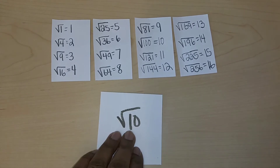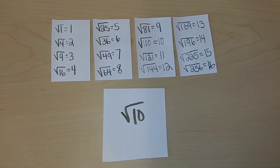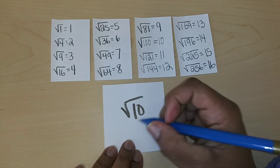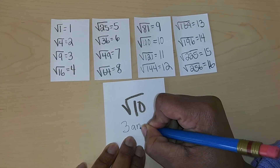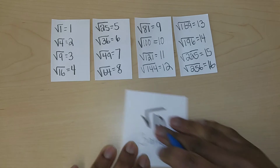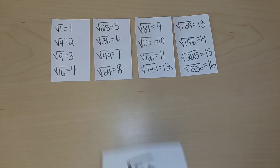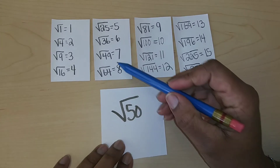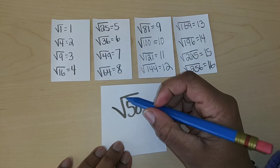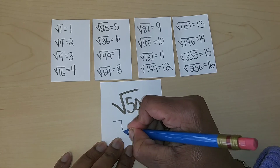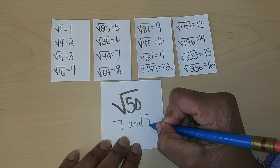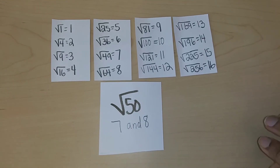What about the square root of 10? It will fall between the whole numbers of 3 and 4. Square root of 50 — the square root of 50 is very close to the square root of 49, so I know it's more than 7 but it definitely has to be less than 8, so it will fall between 7 and 8 on the number line.